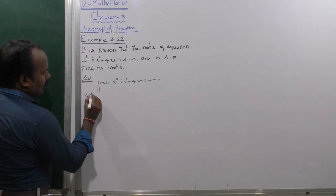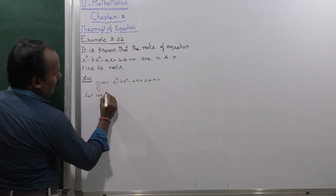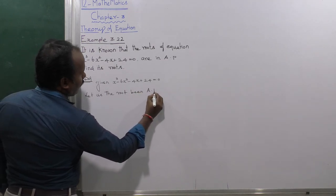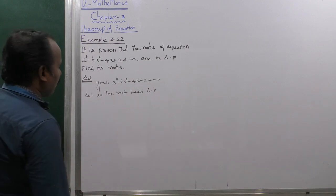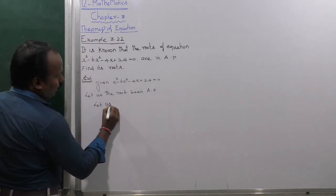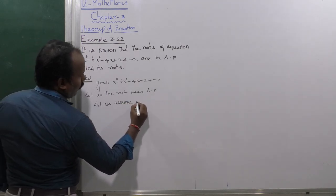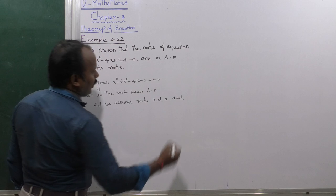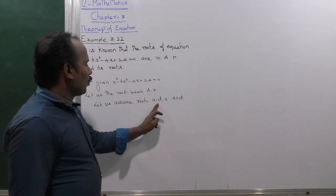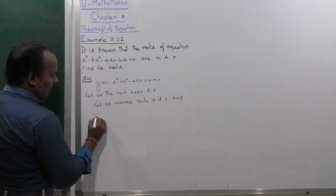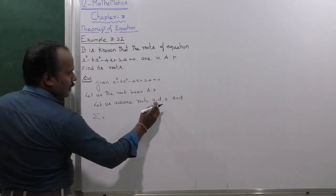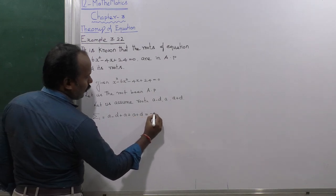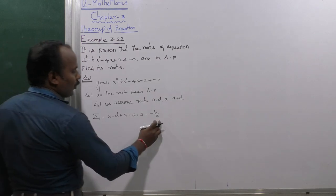Let us consider the roots in AP. Let the roots be A - D, A, A + D. Next, find the value of summation 1. Summation 1 is the sum of the roots: (A - D) + A + (A + D) = -B/A. That is formula number 1.